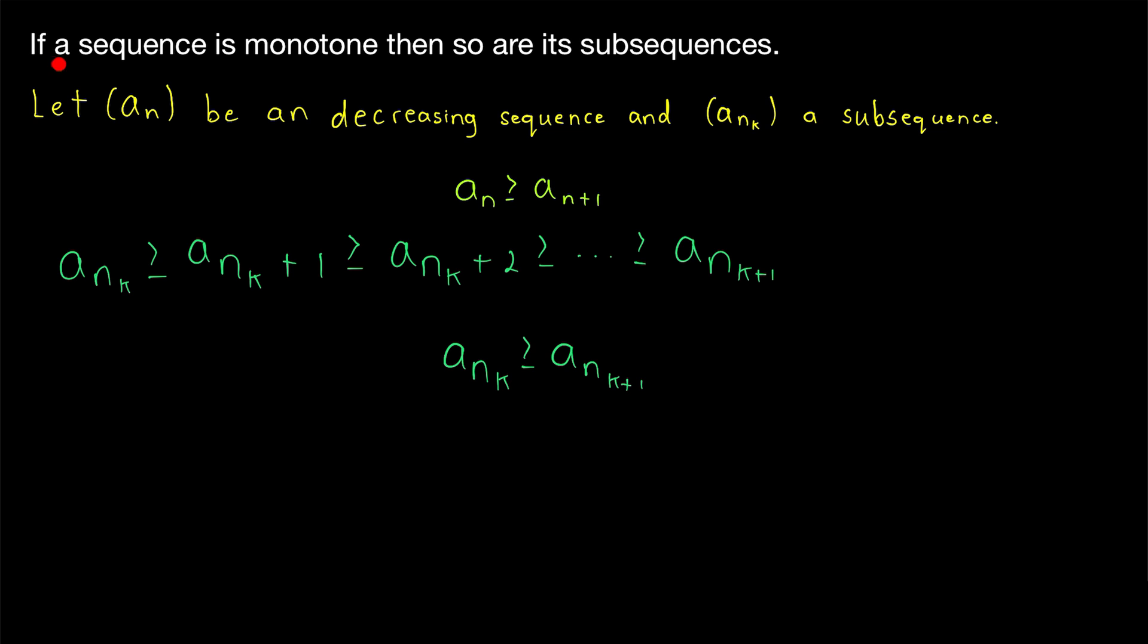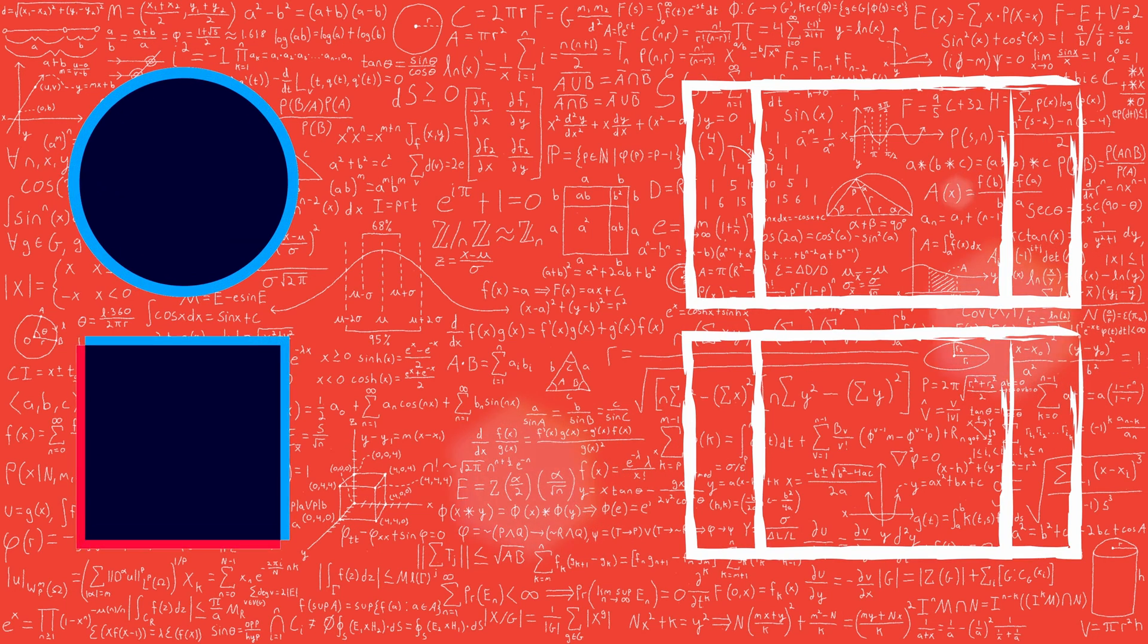And finally, we actually proved something a little bit stronger than what this says. We didn't just prove that if a sequence is monotone, then so are its subsequences. That could mean that an increasing sequence has decreasing subsequences. That's not what we proved. We proved that increasing sequences have increasing subsequences, and decreasing sequences have decreasing subsequences, just like we'd expect.